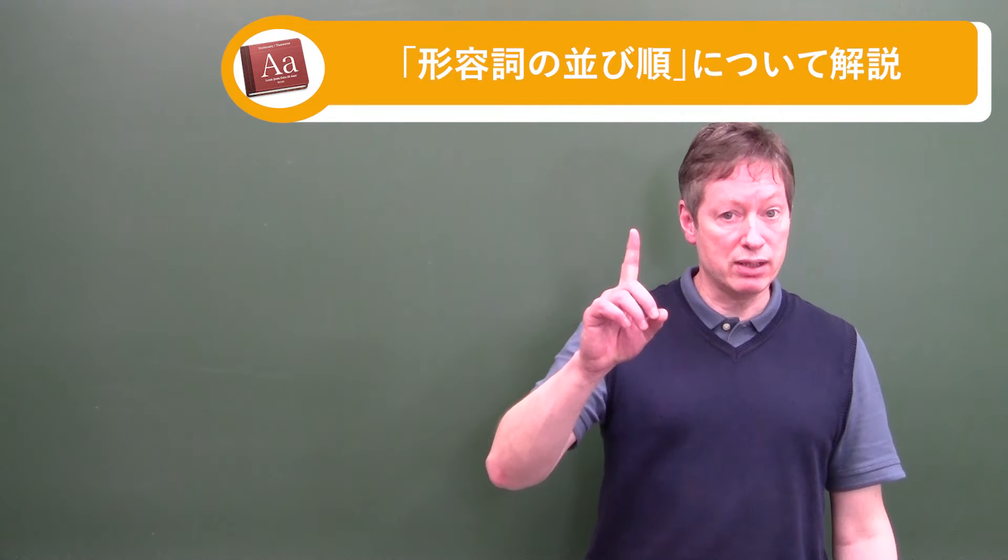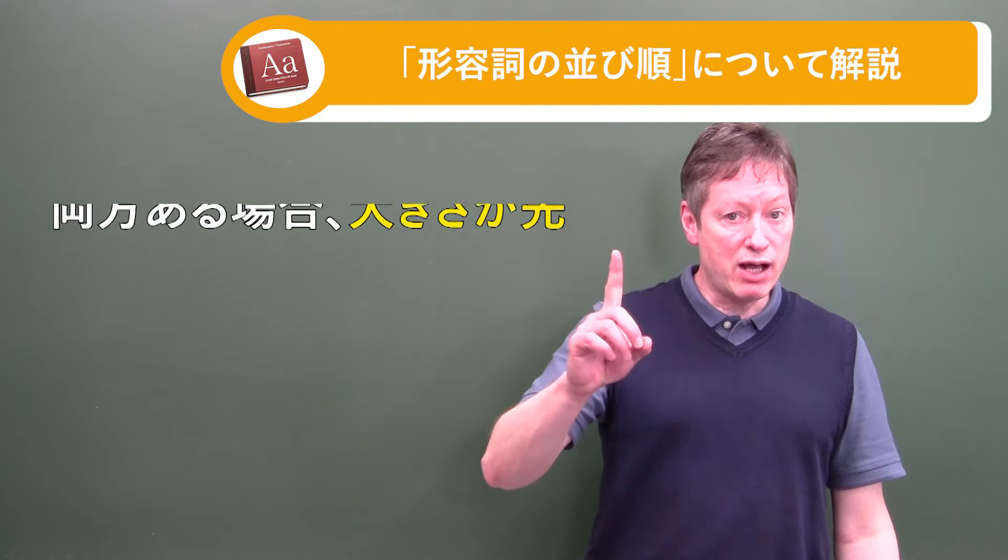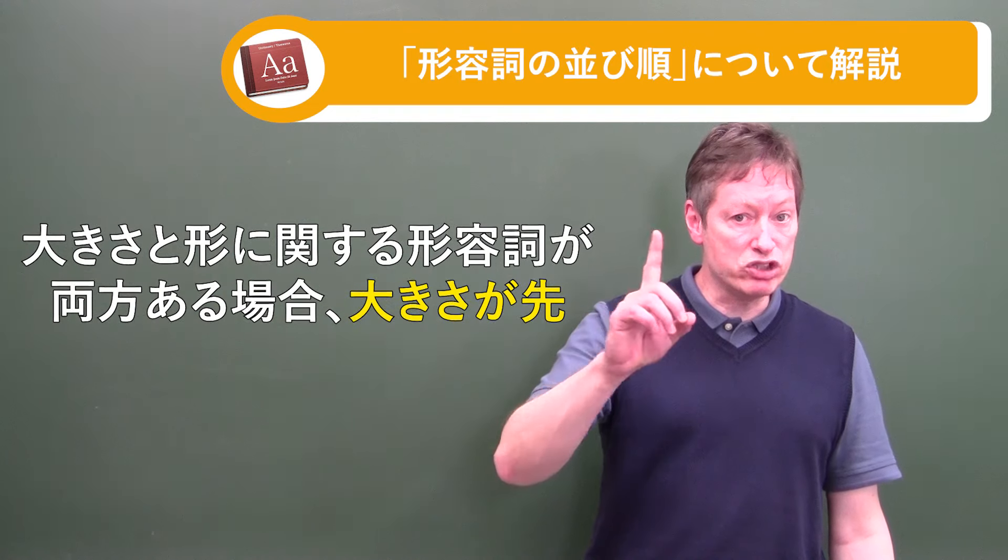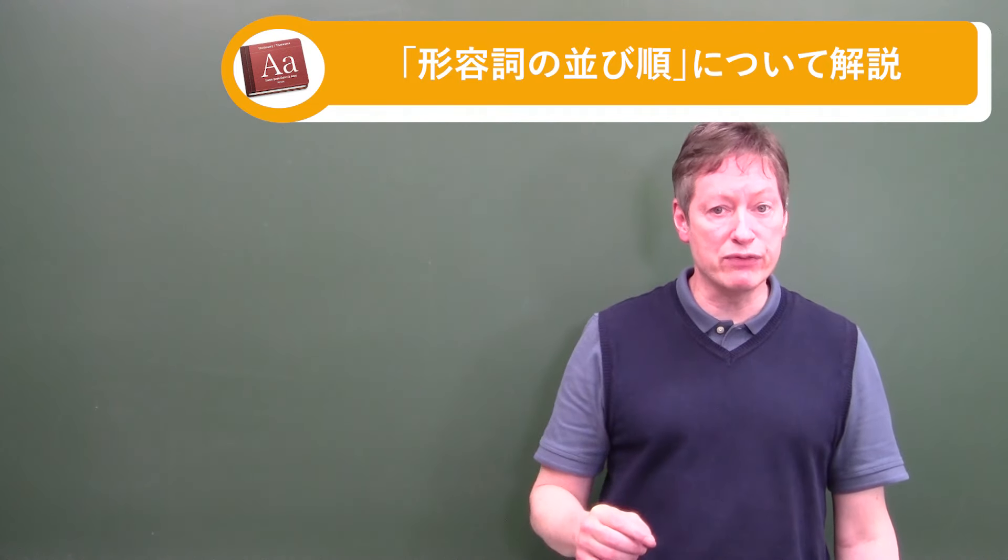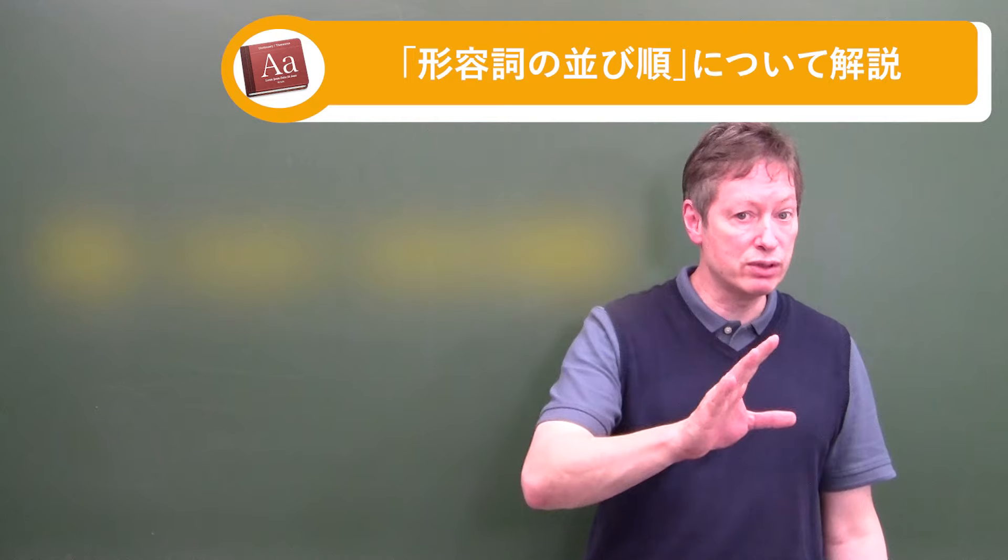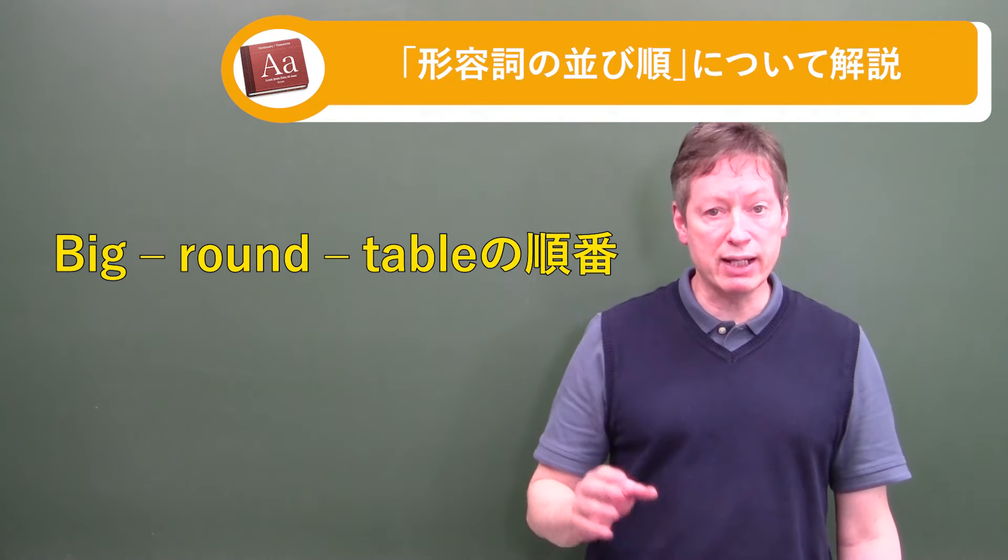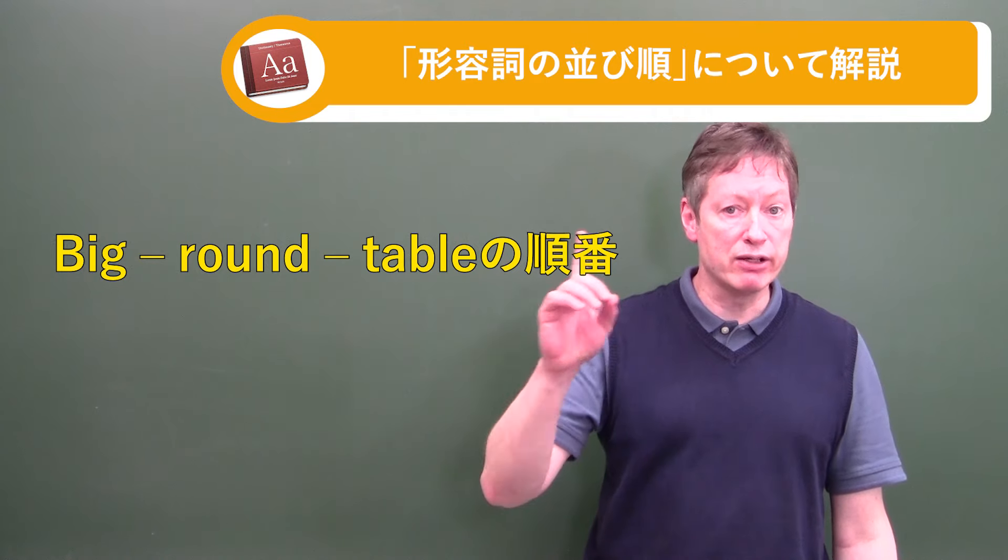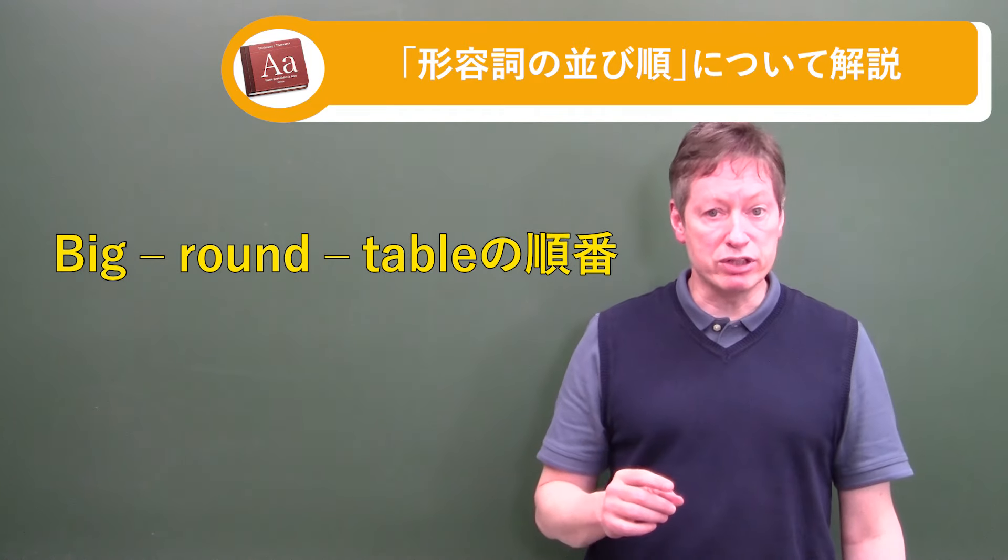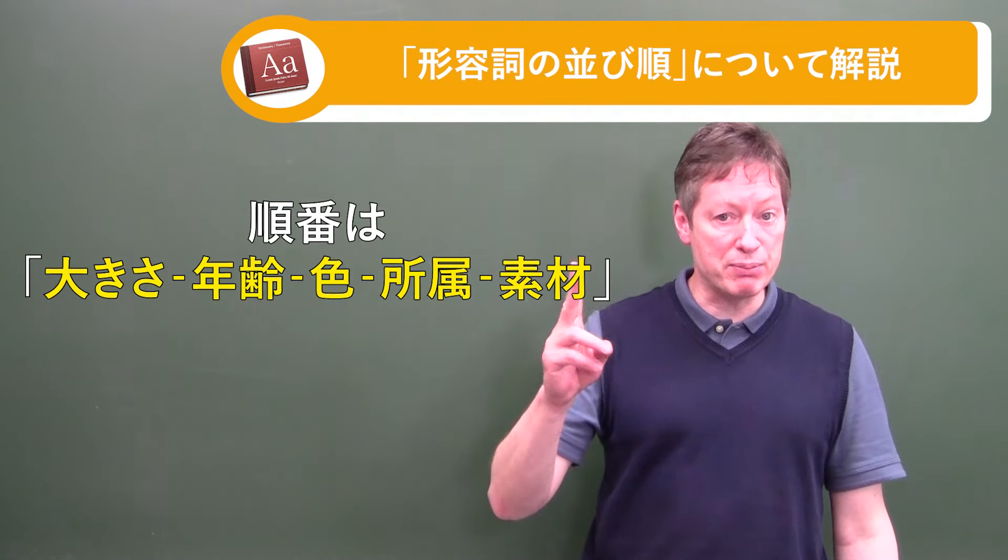So first the size. Now if you have a size and the shape, usually the size will come first. So if it's big round, big round table would work that way. Not round big table, big round table for the shape. So size first and shape second.